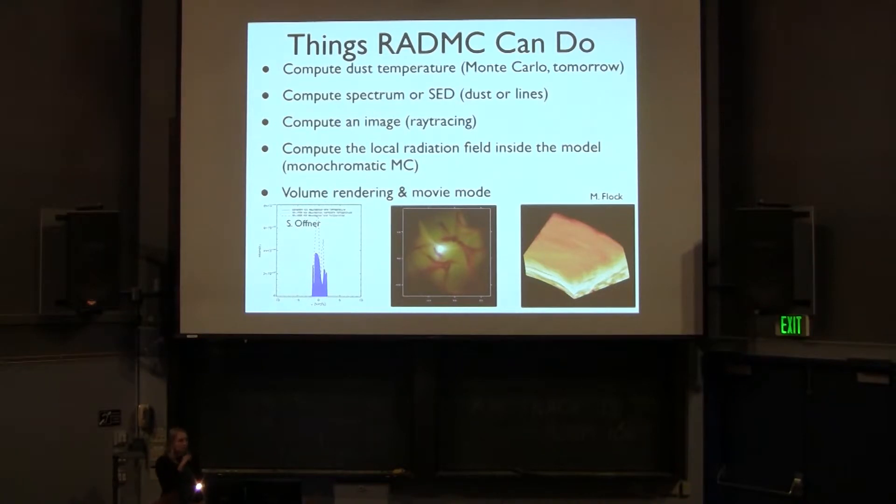So just a general overview of what RADMC3D can do. Well, it does deal with dust. So you can compute dust temperature and properties. This uses a Monte Carlo approach, which is what I'm going to be talking about tomorrow. It can compute spectrum or SEDs. It can compute images, for example, here. The images are computed via ray tracing. So after you do the radiative transfer, then you can integrate the emission and get a synthetic image.